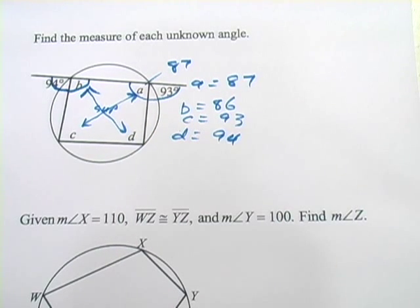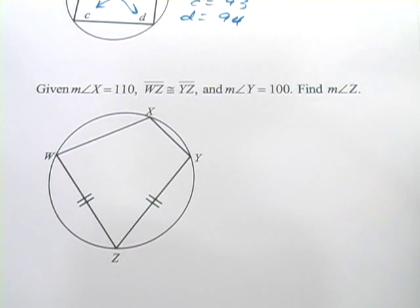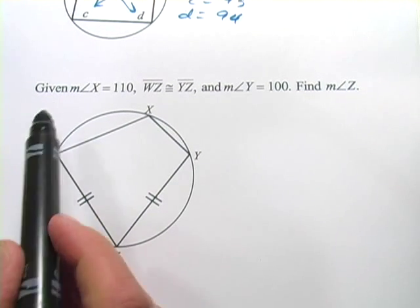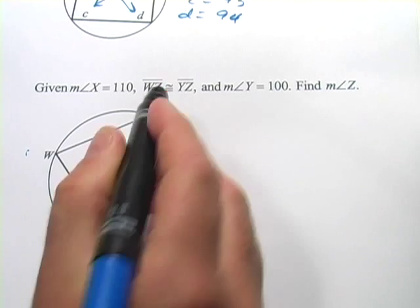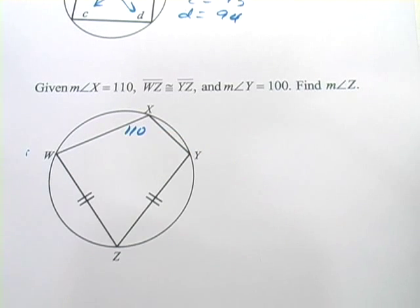That's all there is to that one. Let's look at one more here. This looks a little bit different. It says given the measure of angle X is 110, so there's angle X.